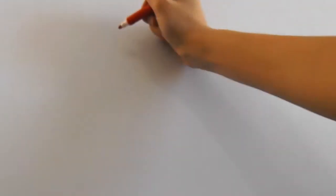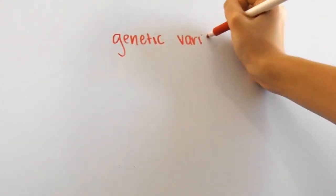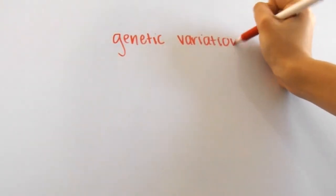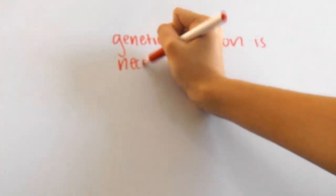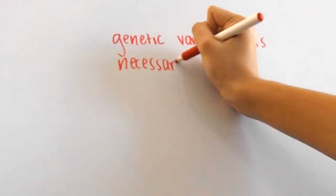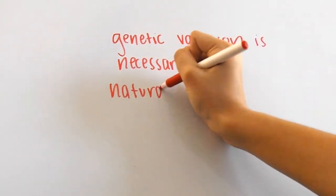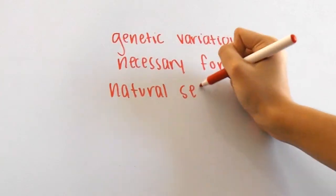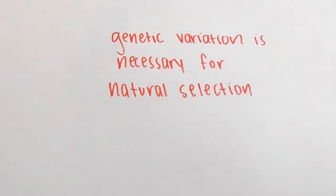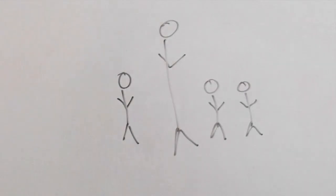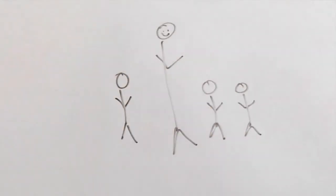Genetic variation is extremely important — in fact, it's necessary for natural selection to act on a population. Without variation, some individuals would not have advantages over others. So that's all for the origins of genetic variation, and I hope you liked this video.